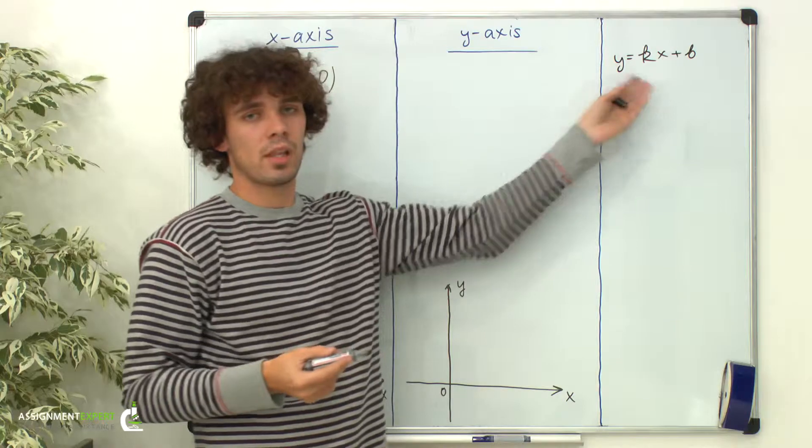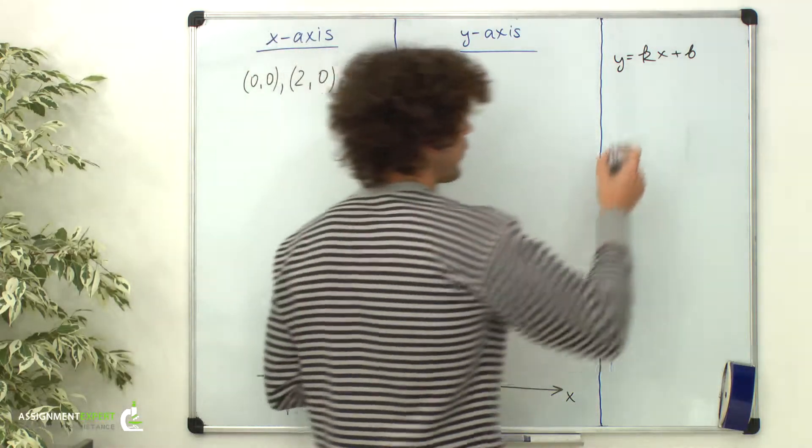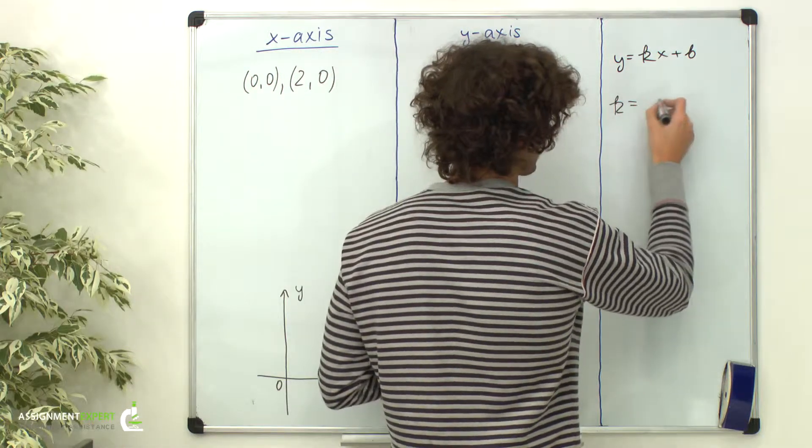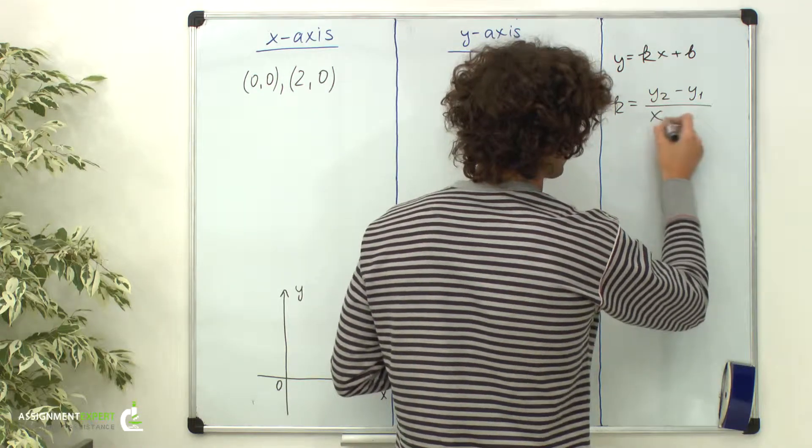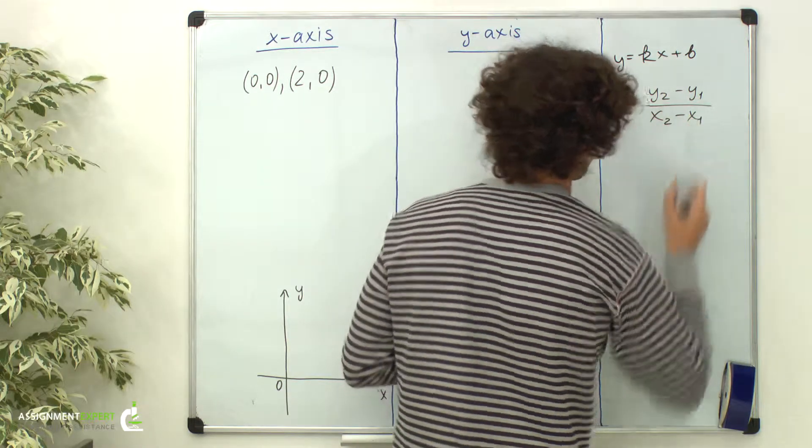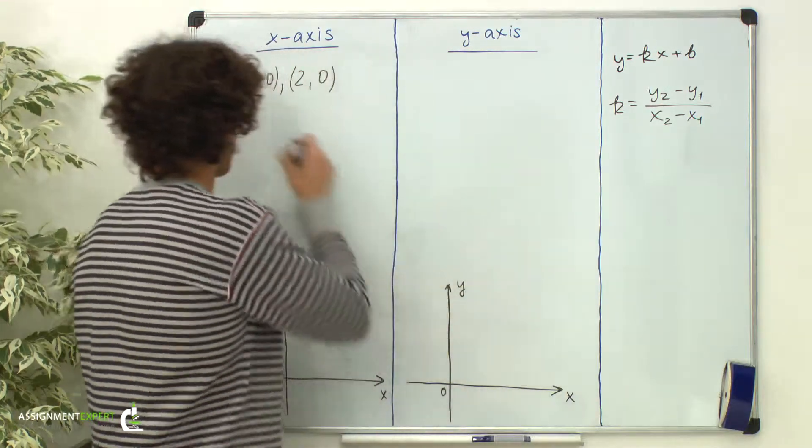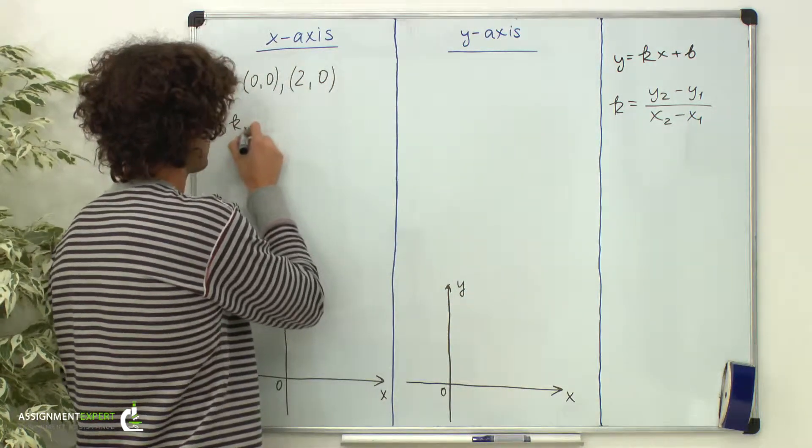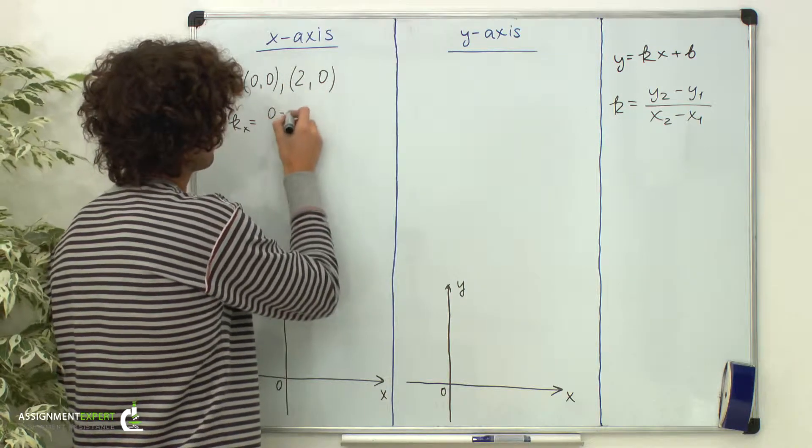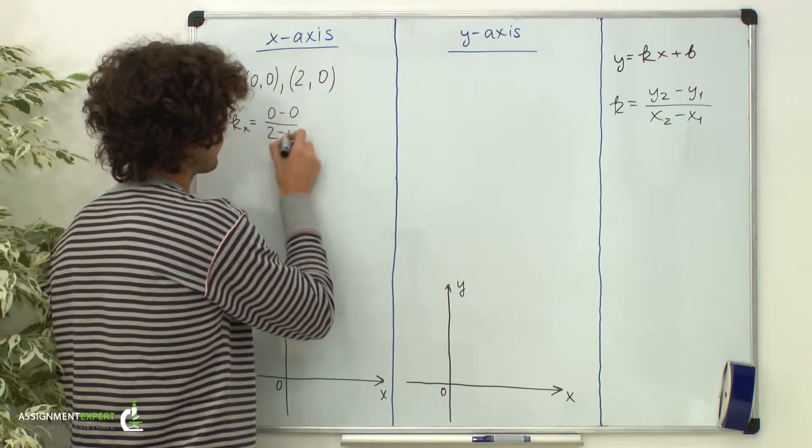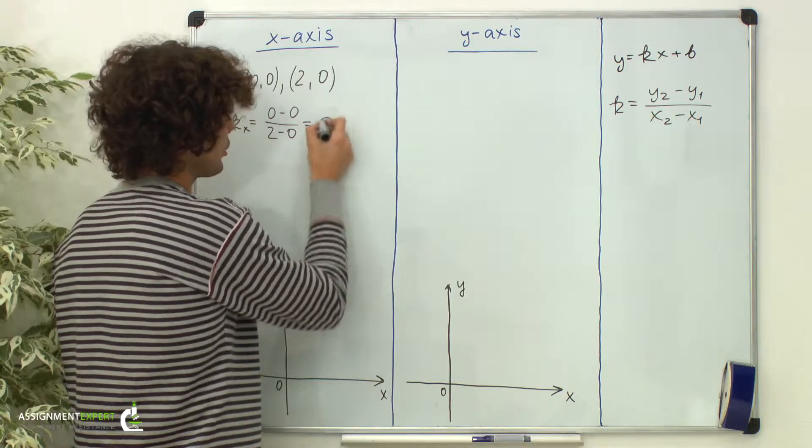First we need to find the slope of the line, and we have a formula to find it. k equals y2 minus y1 over x2 minus x1. So in our case, k equals 0 minus 0 over 2 minus 0, which gives us 0.